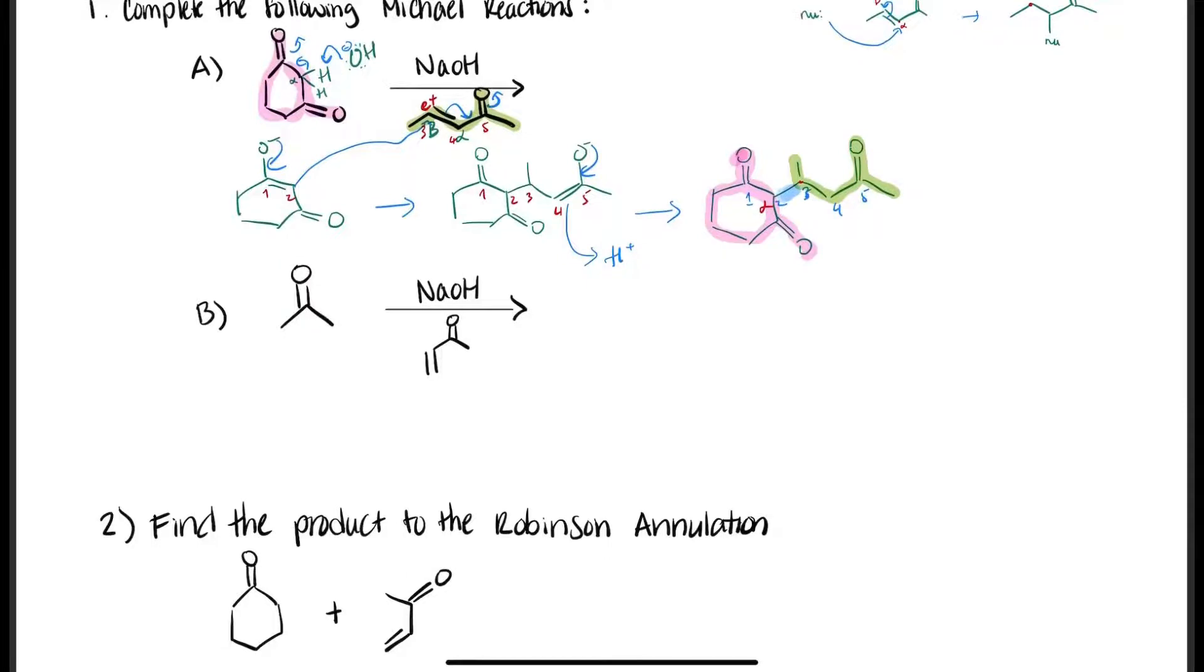The next one is similar, right? So after we form an enolate, it will attack an electrophile, and again we form a 1,5-dicarbonyl.